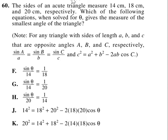Okay, the sides of an acute triangle measure 14 centimeters, 18 centimeters, and 20 centimeters, respectively. Which of the following equations, when solved for theta, gives the measure of the smallest angle of the triangle?